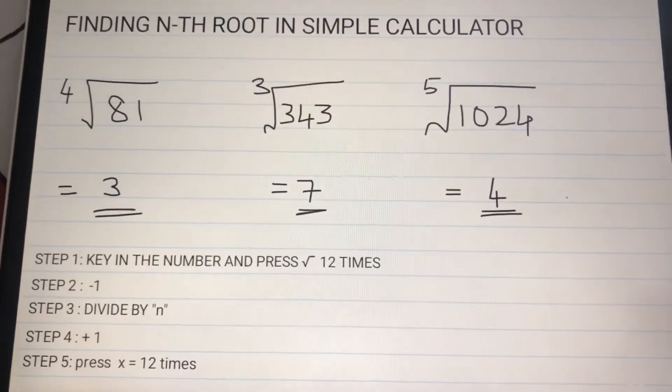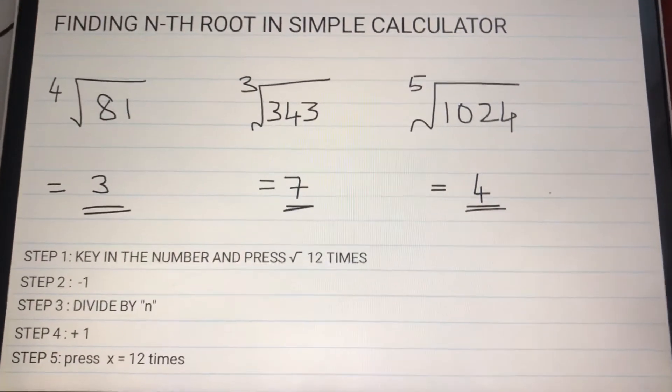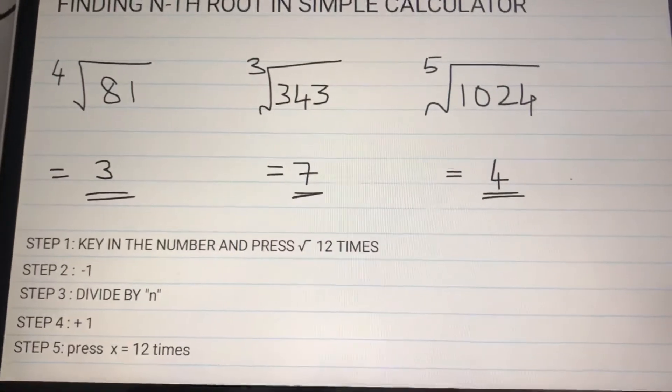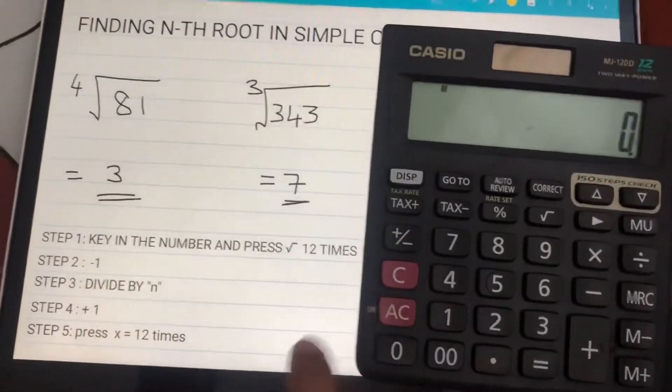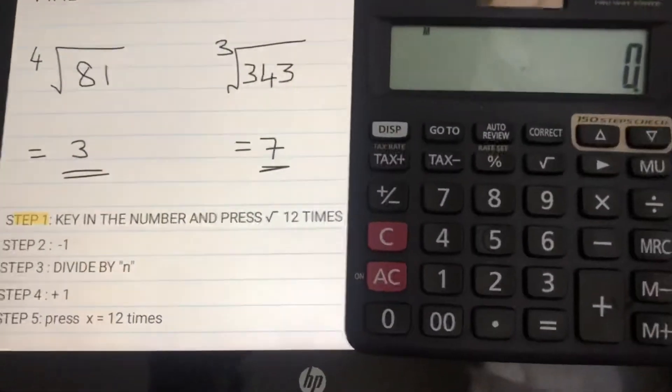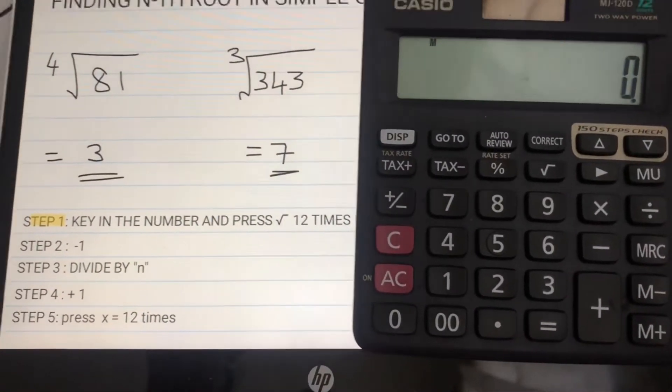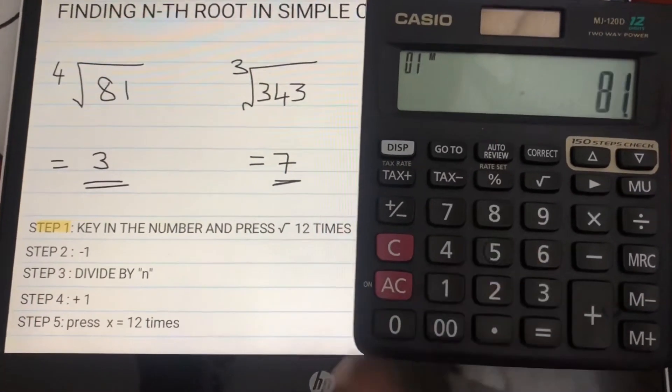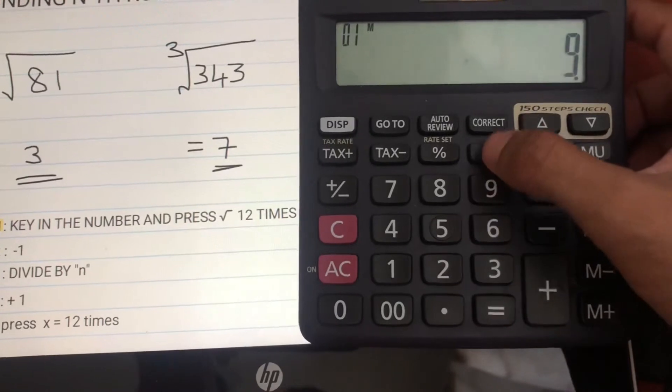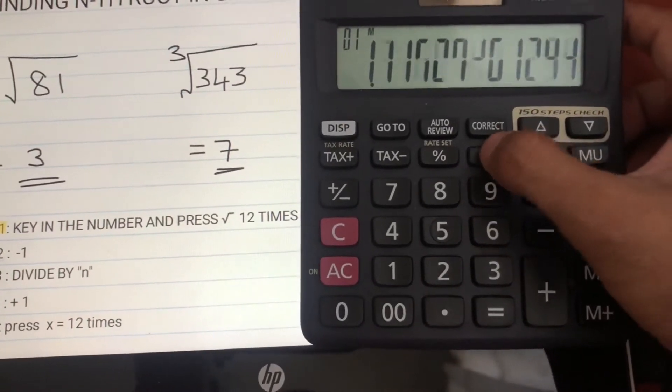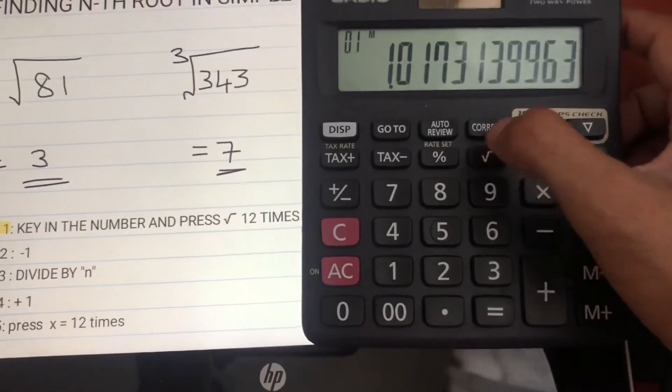So let's check for the first one: fourth root of 81. We should get the answer as 3. So first, what's step one? Step one says key in the number and press square root 12 times. So let me key in the number 81, and I'll press square root 12 times: 1, 2, 3, 4, 5, 6, 7, 8, 9, 10, 11, 12.